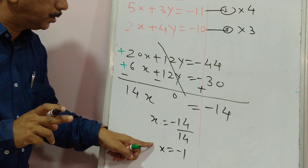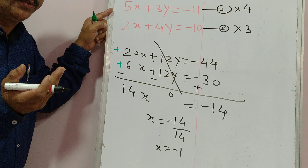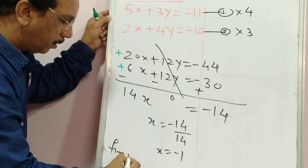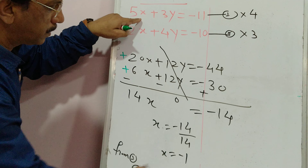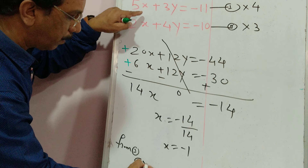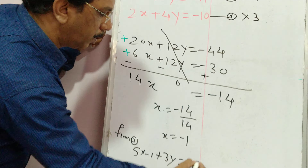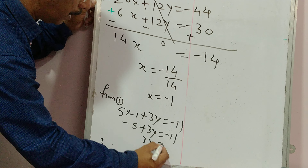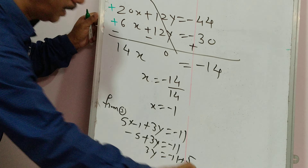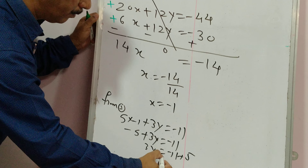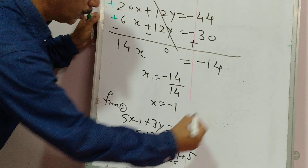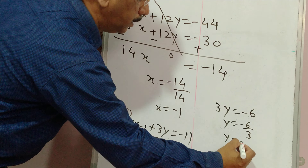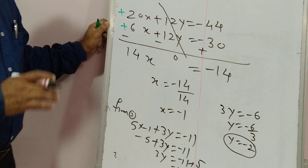After getting one value, substitute it into any one of the equations. Replace x with minus 1 in the first equation: 5 times (minus 1) plus 3y equals minus 11, which gives minus 5 plus 3y equals minus 11. Transfer minus 5 to the right-hand side — it becomes plus — so 3y equals minus 11 plus 5, which is minus 6. Therefore y equals minus 6 divided by 3, giving y equals minus 2.